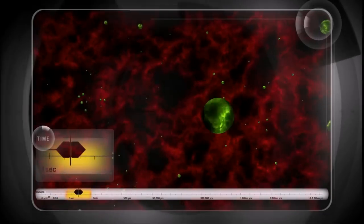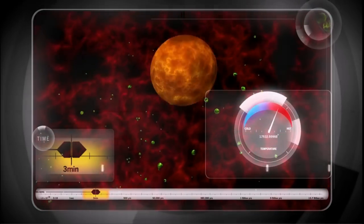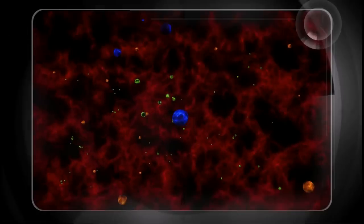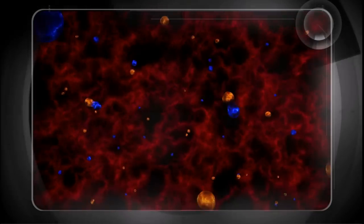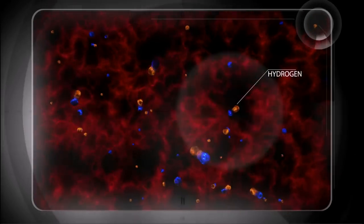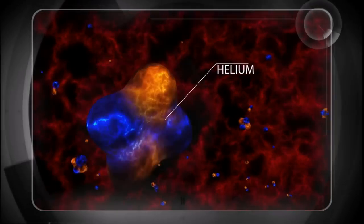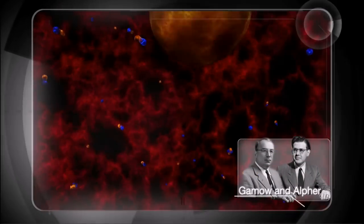Roughly three minutes after the Big Bang, the temperature of the universe has dropped to a mere one billion degrees Fahrenheit. Cool enough for atomic nuclei to form. The element hydrogen forms. Some hydrogen atoms fuse to create helium, as proposed by Gamow and Alpher.